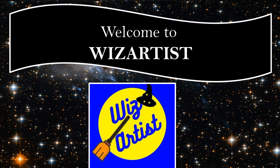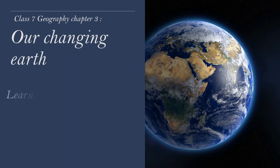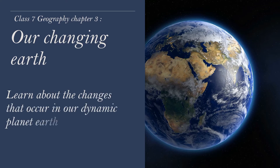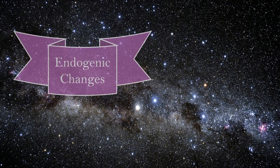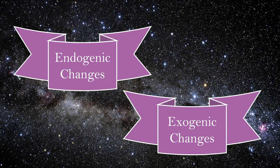Hello everyone. Welcome back to VizArtist. Today we will learn Class 7 Chapter 3 of geography, 'Our Changing Earth,' wherein we will understand about the various changes that occur in our dynamic planet Earth. In the last video we had understood endogenic changes. Be sure to check the description for the link of that video. And in today's video we will understand exogenic changes. So let's get started.